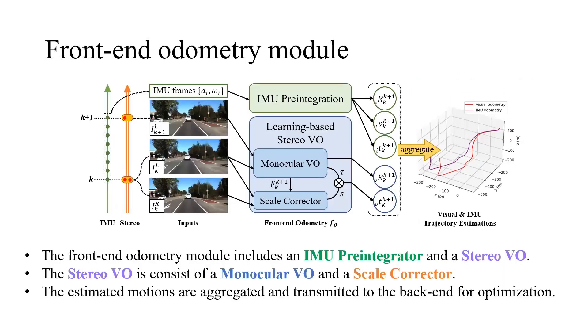Our front-end odometry model includes an IMU preintegrator and a stereo VO to estimate frame-to-frame motion from IMU data and stereo images, respectively. The stereo VO consists of a monocular VO for estimating the rotation and translation direction, and a scale corrector for recovering the true scale. The estimated motions are aggregated to form trajectories and then transmitted to the back-end for optimization.